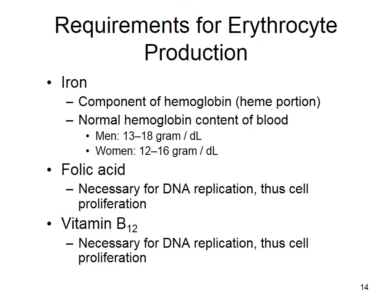To make more red blood cells you need some nutrients. One is iron, because it's an integral portion of the heme group. Men on average have 13 to 18 grams of iron per deciliter of blood; women have 12 to 16 because of menstruation. You also need folic acid — one of the B vitamins — for DNA replication, since reticulocytes have to replicate themselves. And you also need vitamin B12 for DNA replication as well.